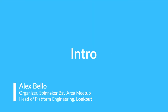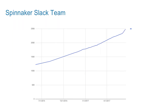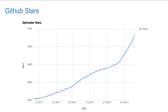I was talking to Brandon on my team and Ben from Armory, and I was saying there's a lot of momentum in the community around Spinnaker. All these companies are talking about it, the Slack channel is growing. Ben shared this Spinnaker 1.0 release data - you can see an uptick in Slack membership and GitHub stars. There's clear momentum.